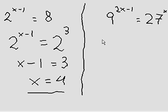9 is actually 3 squared. So I can write 3 squared here. And actually put it to the power of 2x minus 1. It stays there for now. Oh, that does not look like a 1, so I'm going to rewrite it.